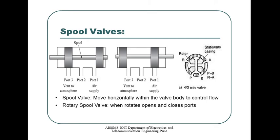The spool valve is the simplest type of directional control valve. It consists of a spool, which is a cylindrical member that has a large diameter spool land, which slides in a very close fitting bore of the valve body. The rotary spool valve consists of a rotating spool which aligns with the ports in the stationary valve body so that the fluid is directed to the required ports. When it is rotated, that allows opening and closing of the ports.